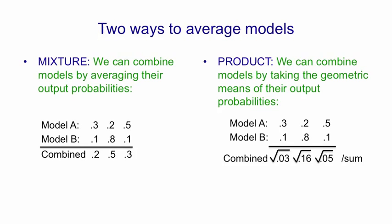The geometric means will generally add up to less than 1, so we have to divide by the sum of the geometric means to normalize the distribution so that it adds up to 1 again. You'll notice that in a product, a small probability output by one model has veto power over the other models.